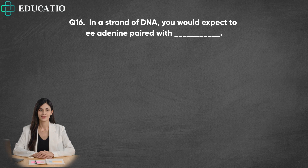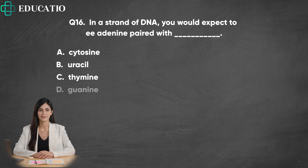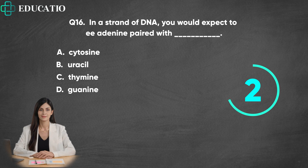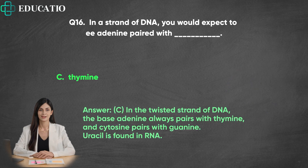Question 16. In a strand of DNA, you would expect to see adenine paired with: A. Cytosine. B. Uracil. C. Thymine. D. Guanine. Answer: C. In the twisted strand of DNA, the base adenine always pairs with thymine, and cytosine pairs with guanine. Uracil is found in RNA.